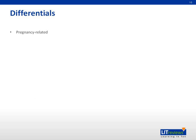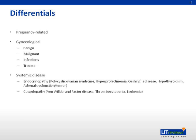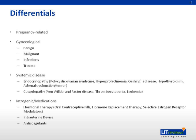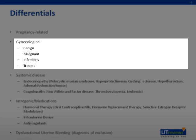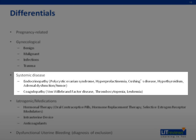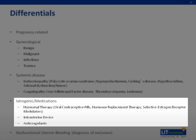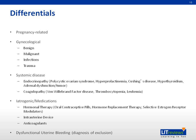The differentials of abnormal vaginal bleeding in a woman include pregnancy-related causes, gynecological causes, various systemic diseases, and iatrogenic or medical-related causes. Dysfunctional uterine bleeding is a diagnosis of exclusion. Gynecological causes can be further subcategorized as benign, malignant, infectious, and traumatic causes. Different endocrinopathies and coagulopathies may also cause abnormal vaginal bleeding. Under iatrogenic causes, hormonal therapies such as OCPs, HRTs, and SERMs, as well as IUDs and anticoagulants, may also cause bleeding. Hence the importance of taking a good medication history.